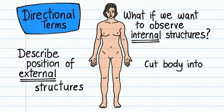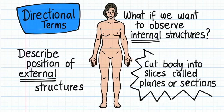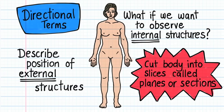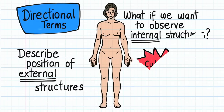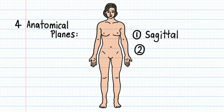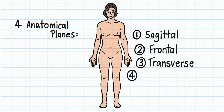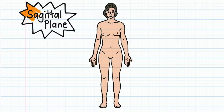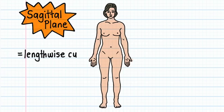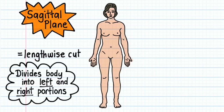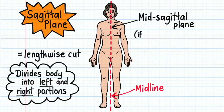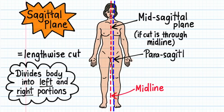To do this we need to cut the body into slices called sections or planes. The four anatomical planes are sagittal, frontal, transverse, and oblique. A sagittal plane is a lengthwise or vertical cut that divides the body into left and right portions. If the cut passes through the midline of the body, we call this a mid-sagittal plane. However, if the cut doesn't exactly pass through the midline, we call this a parasagittal plane.